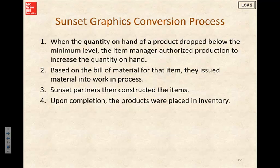Let's continue on with our role of business analyst helping Sunset Graphics Incorporated model their process. Here we're looking at the conversion process. When the quantity on hand of a product drops below the minimum level, the item manager authorizes production to increase the quantity on hand. Based on the bill of material for that item, they issue material into work in process. Sunset partners then construct the items and upon completion, the products are placed in inventory.